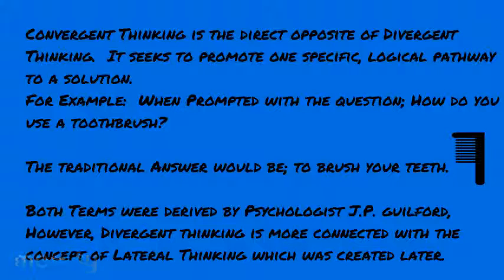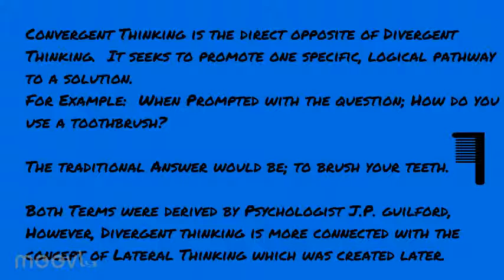Let's use an example of convergent and divergent thinking. We'll pose the question: how do you use a toothbrush? The first thing you think of is the traditional convergent answer — you use it to brush your teeth. Divergent thinking would be placing this object in front of an individual and saying, 'How do you use this object?' And they might say: I use it as a toothbrush, as a cleaning agent, to clean the sink, to clean the toilet — it scrubs.